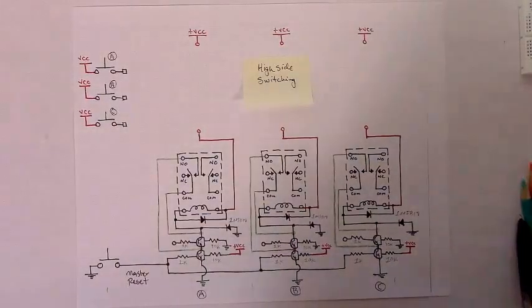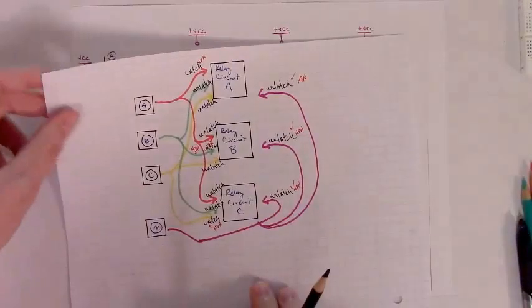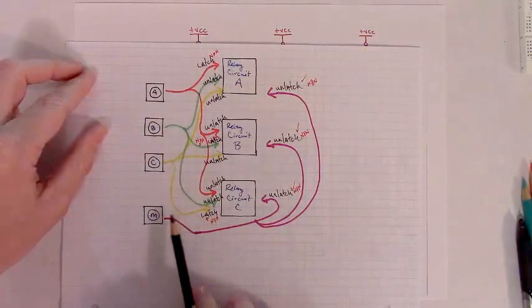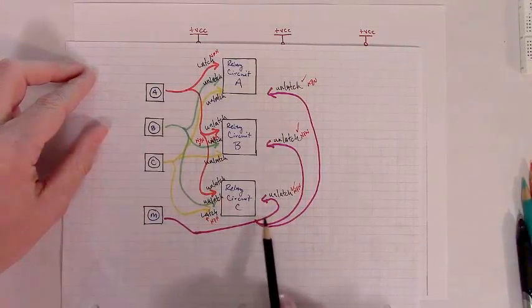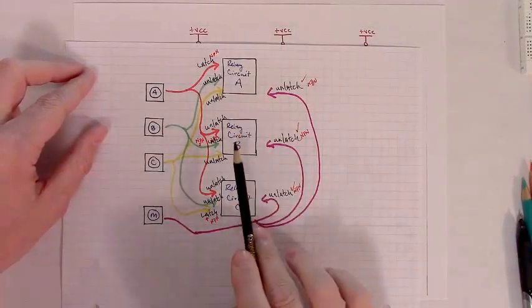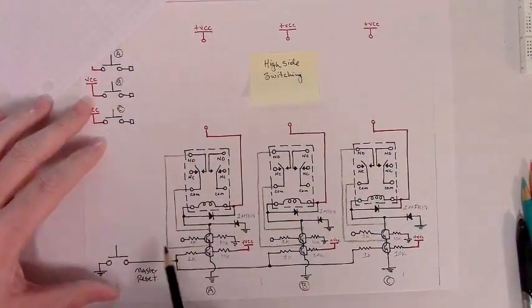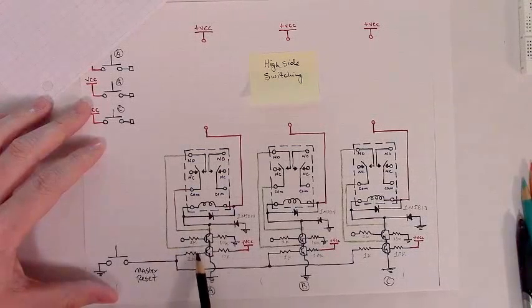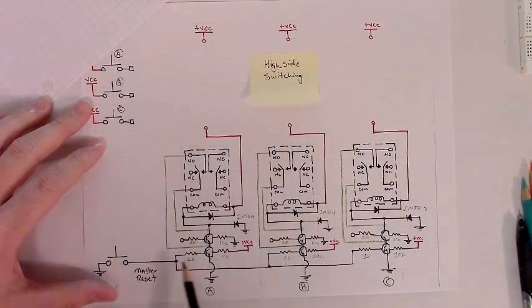In order to get a sense of where this is all going we can take a quick look back at the diagram we did in the first part of this series where we noticed that we would have a master reset line that one line branches into three that can unlatch relay circuits A, B, and C at any point in time when we press it. Well that's your master reset line right there. It's controlling the unlatching of all three of them at the same time regardless of which one happens to be on.